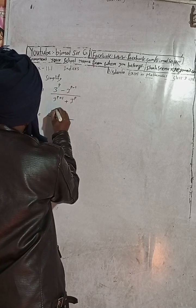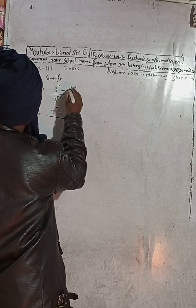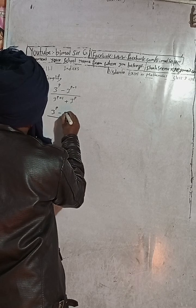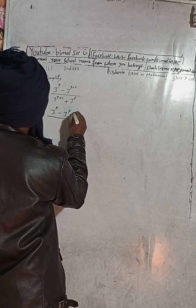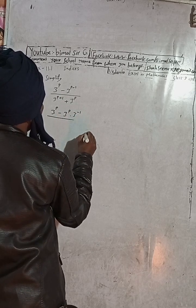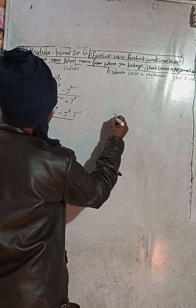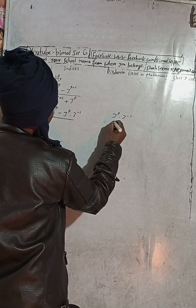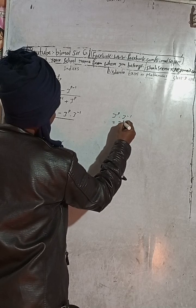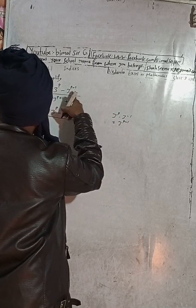Now, 3 to the power P minus 1 is 3 to the power P into 3 to the power minus 1. Okay? If you add this again, if you add this 3 to the power minus 1, okay, you will get same here, 3 to the power P minus 1, same you will get.